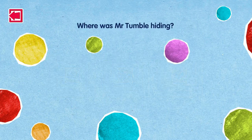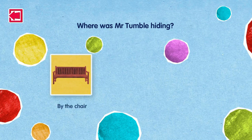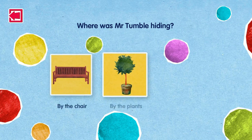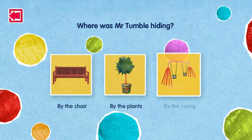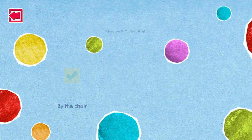Where was Mr. Tumble hiding? By the chair. By the plants. By the swing. That's right!